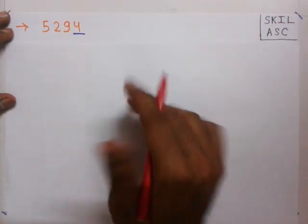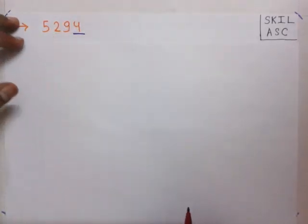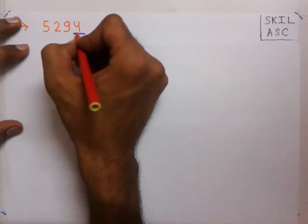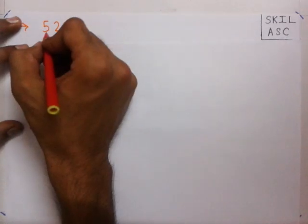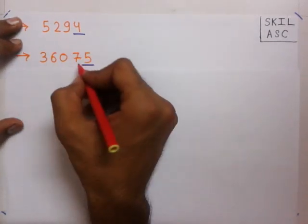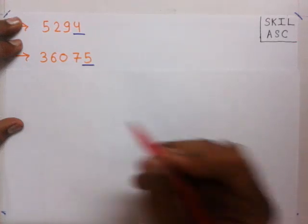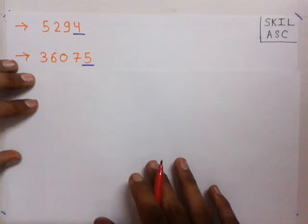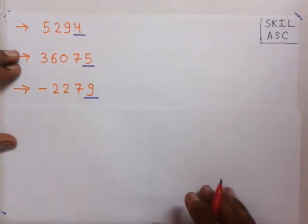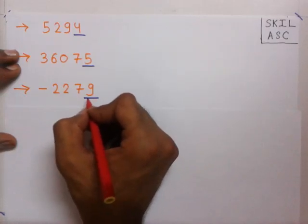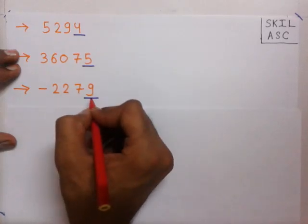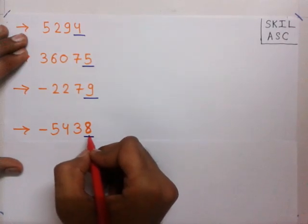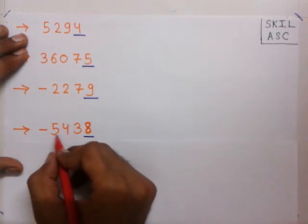Let us take a few more examples. For 5294: the last digit is 4, which is even, so 5294 is an even number. For 36075: the last digit is 5, which is odd, so 36075 is an odd number. For the negative number -2279: the last digit is 9, which is odd, so -2279 is an odd number. For -5438: the last digit is 8, which is even, so -5438 is an even number.